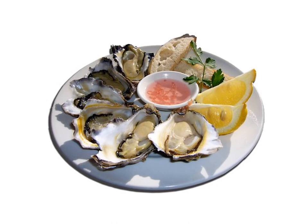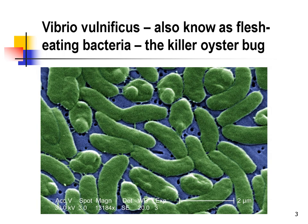Raw oysters, the quintessential Louisiana delicacy. They're briny, salty, and have a tinge of petroleum flavor so we know they're Louisiana oysters. This is the bug that got people really interested in oyster-borne illness: Vibrio vulnificus. It's also known as the flesh-eating bacteria and it suddenly changed the complexion of oyster-borne illness from something that causes chronic illness to something that can cause sudden death.